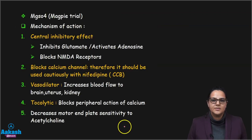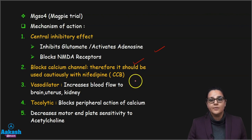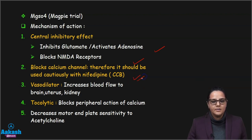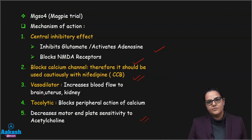Coming to magnesium sulfate — also known from the Magpie trial. What is the mechanism of action? It has a central inhibitory effect: it inhibits glutamate and activates adenosine. It blocks the NMDA receptor. Second, it is also a calcium channel blocker — we should not mix it up with other calcium channel blockers like nifedipine which is given to decrease blood pressure. Third, it decreases the motor end plate sensitivity to acetylcholine. Because of these factors — central inhibitory effect, calcium channel blockade, and decreased motor end plate sensitivity to acetylcholine — it is used as an anticonvulsant.